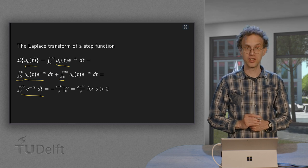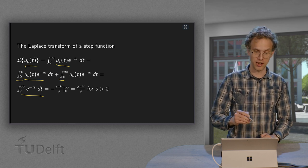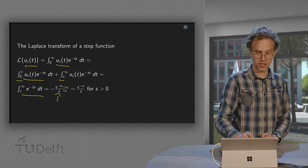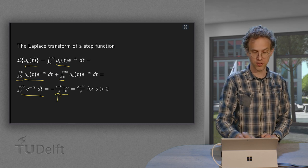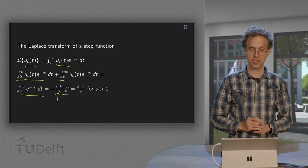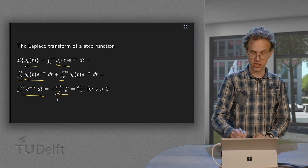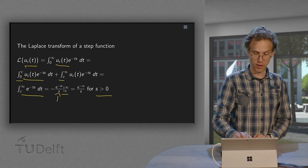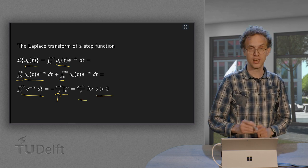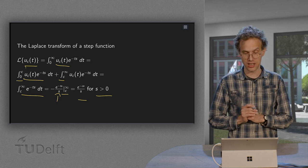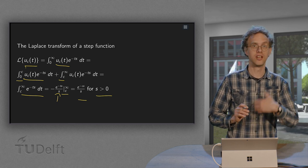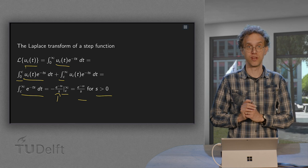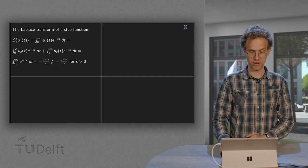We can integrate explicitly. We find an antiderivative of minus 1 over s times the exponential, evaluated between the boundaries. The upper boundary gives us 0 for s positive, and the lower boundary gives us e to the power minus cs over s, with an additional minus sign because we are on the lower boundary.